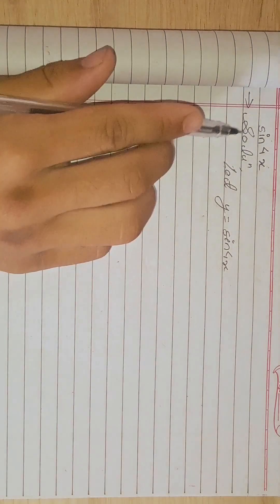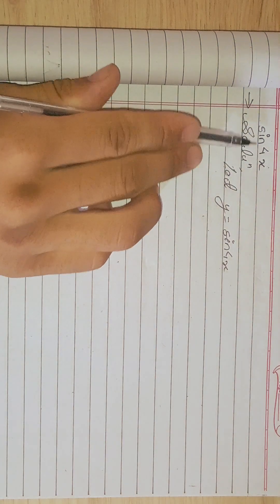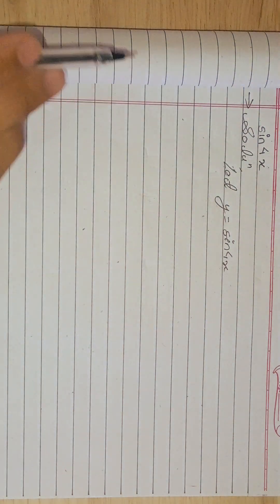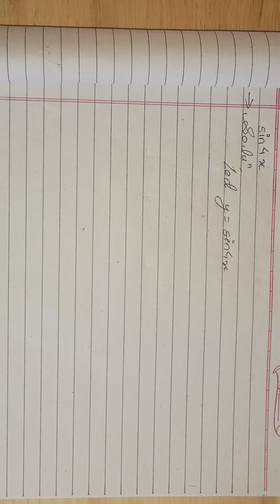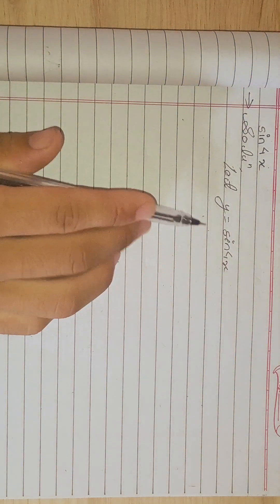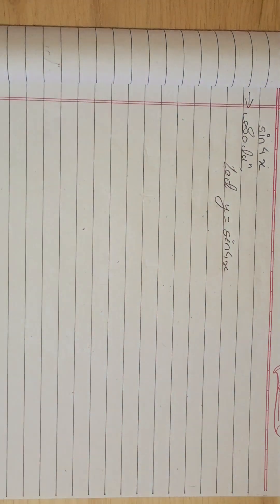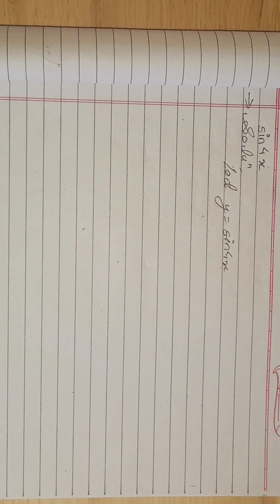Since we are given only sine of 4x, we need y as well. So I let y equal to sine of 4x. If y equal to sine 4x is already given, you don't need to perform this step, but if not given, then you have to do this.